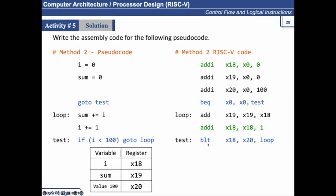What is it going to do next? It is going to check the condition x18, which is i, is less than 100. If i is less than 100 and this condition is satisfied, it will jump to loop and then it will execute the instruction.